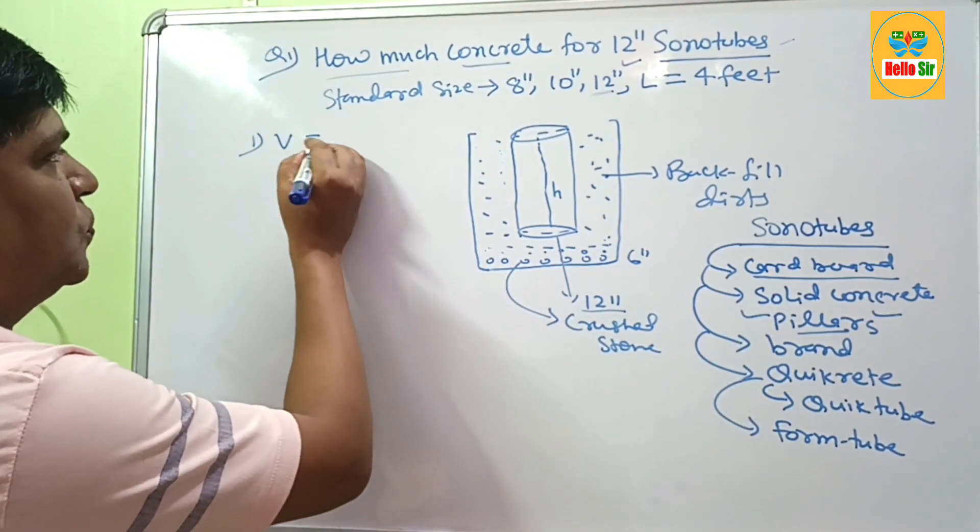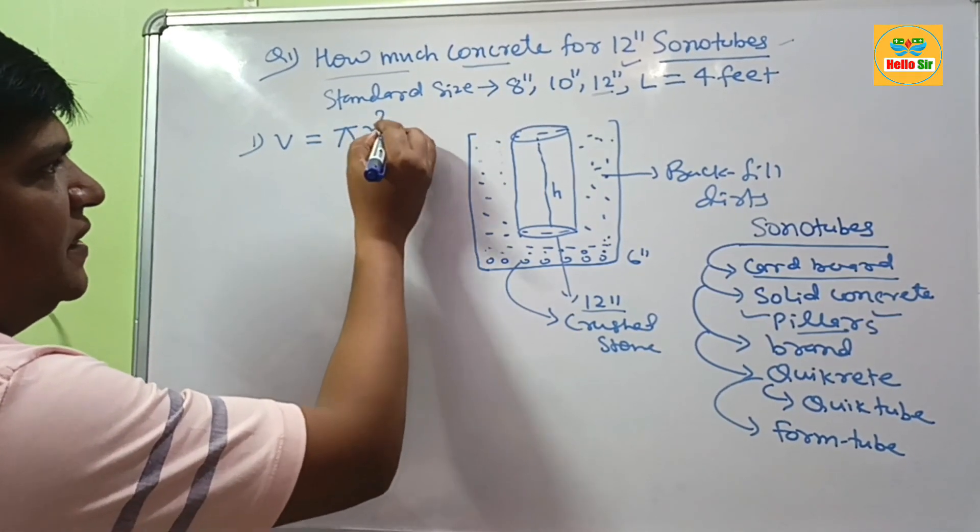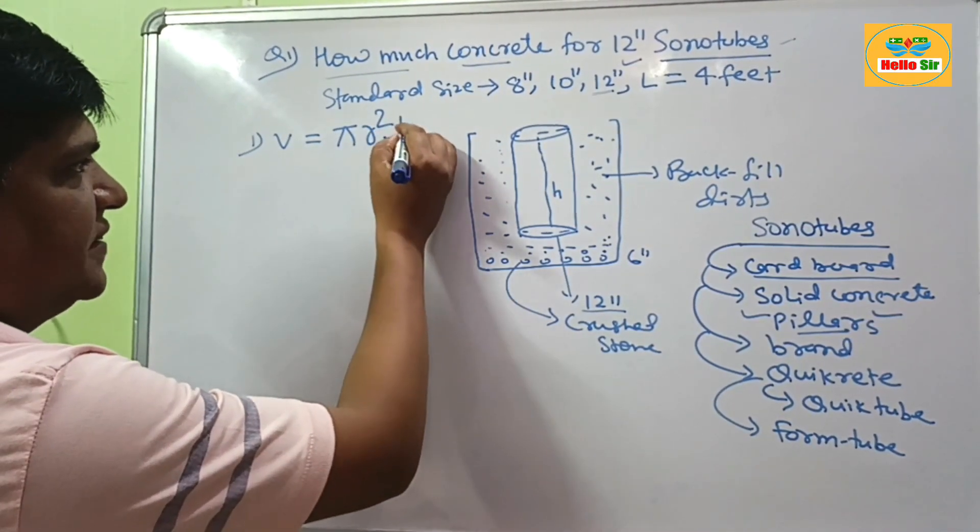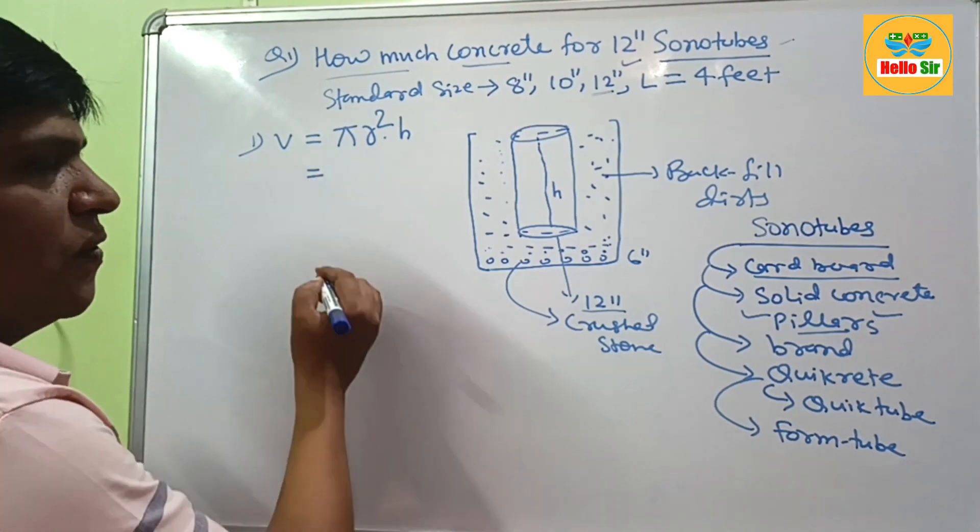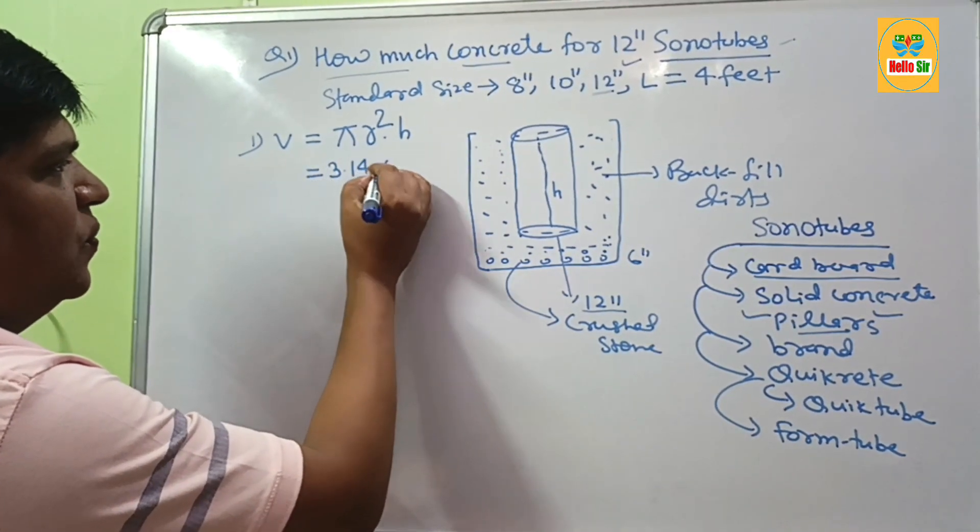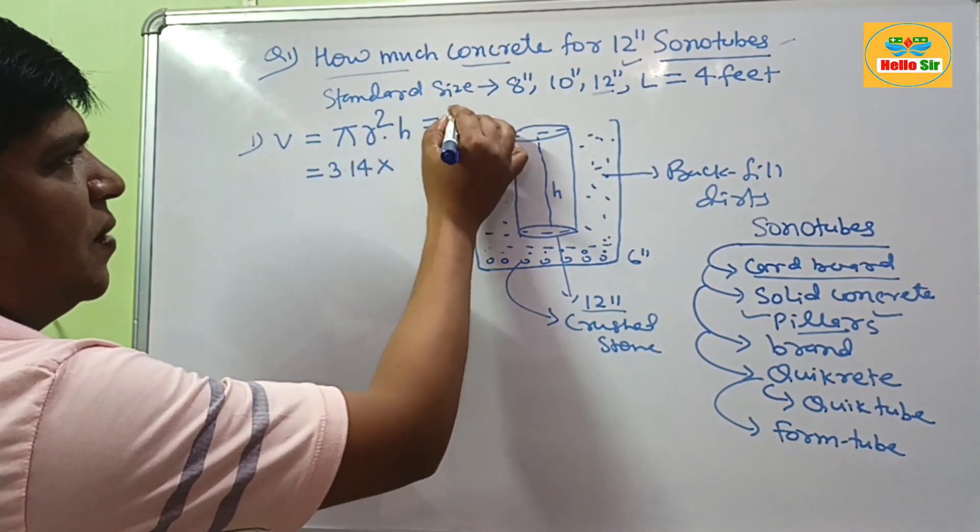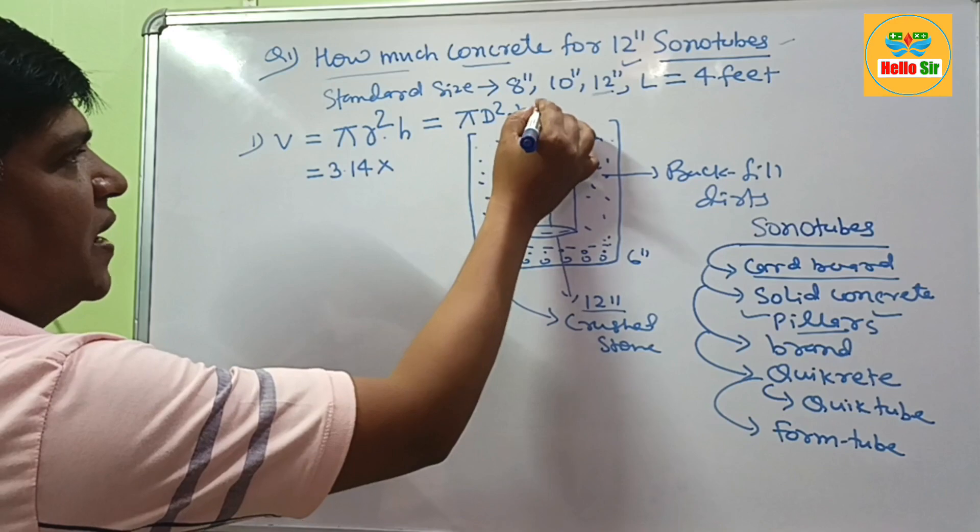The volume of sonotubes is calculated by the formula πr²h. The value of π is about 3.14. You can also write this formula as πd²h/4.